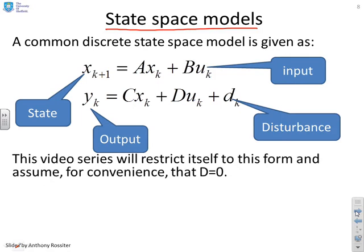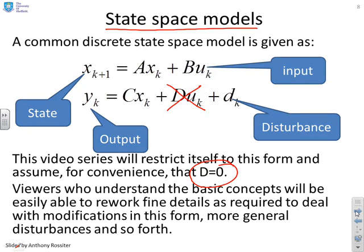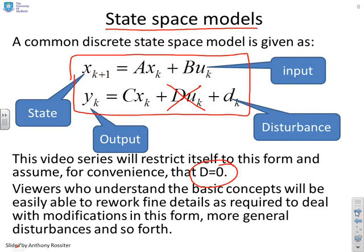Now in this particular series we're going to assume that D is zero, so that term is going to disappear, i.e., there isn't a straight through from the input to the output, which for most systems is a reasonable assumption. Now the other thing we're going to make clear here is this is a standard or a classic state-based model. Of course, in particular cases and particular scenarios, the state-based model that represents your system may be just a little bit different, but if you can follow everything we do with this model, then making the required modifications for a slightly different model will be straightforward.